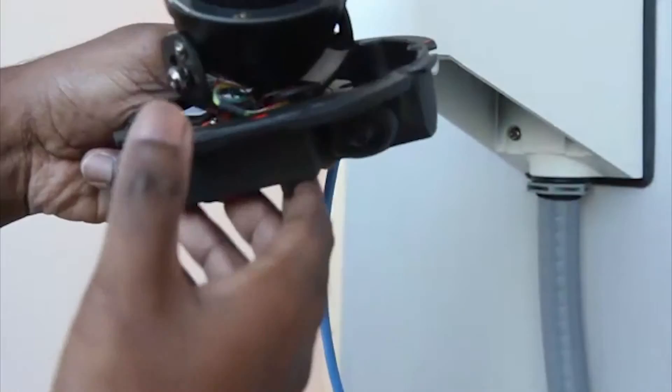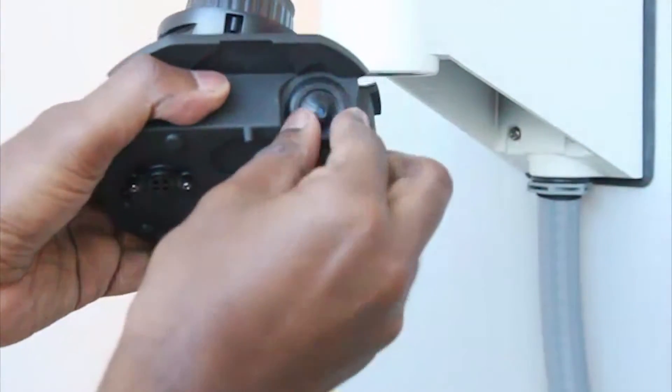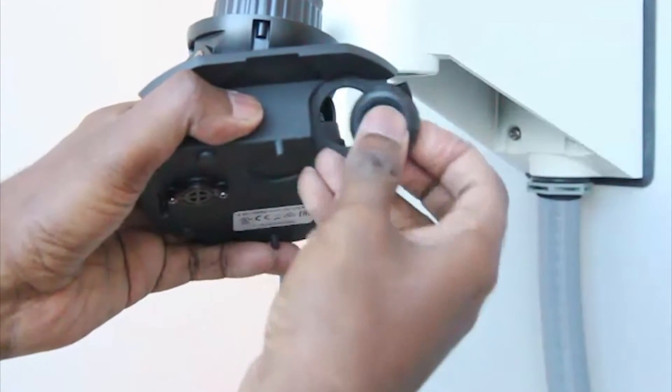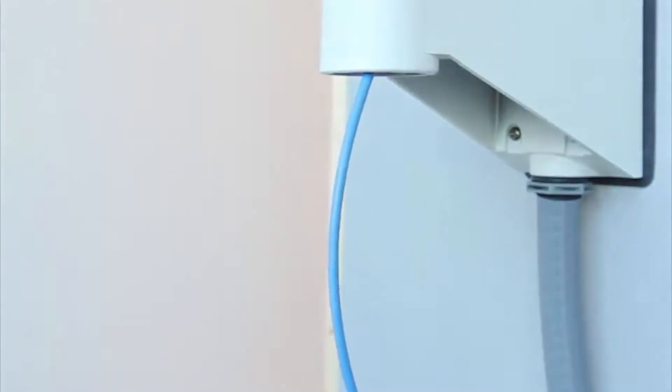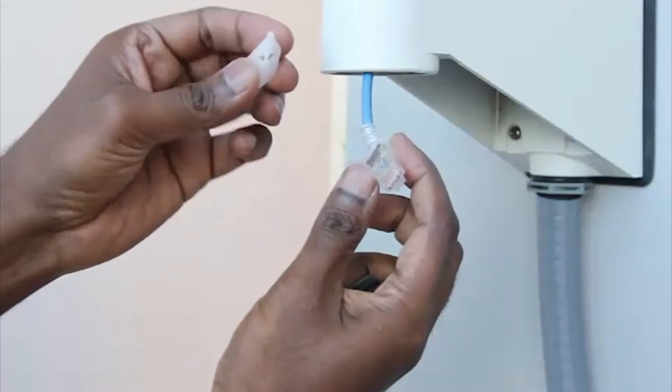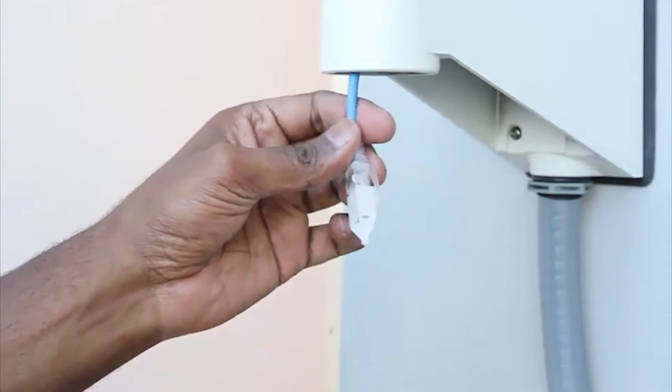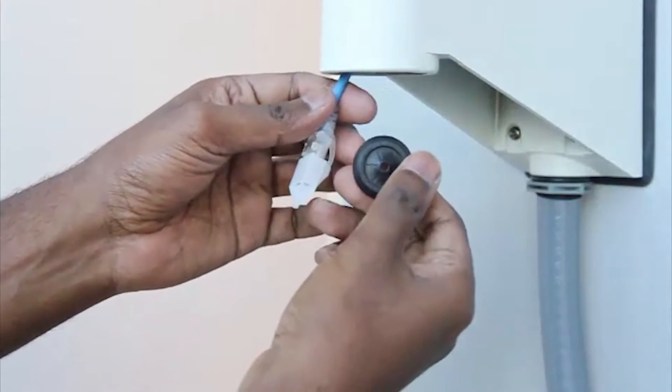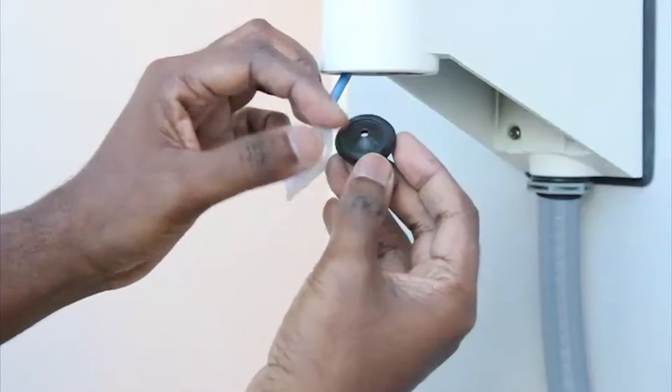Next, remove the sealing grommet from the camera base. The sealing grommet should always be used to prevent dust and debris from entering the camera. Push the ethernet cable through the grommet using one of the following methods. If the ethernet cable is not crimped, push the cable through the grommet. If the ethernet cable is already crimped, place the grommet piercing cap on the ethernet connector, then push the cable through the grommet. Ensure that the orientation of the cable and grommet matches what is shown here.